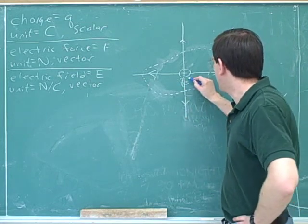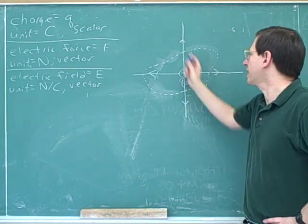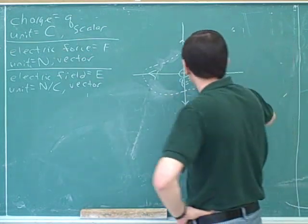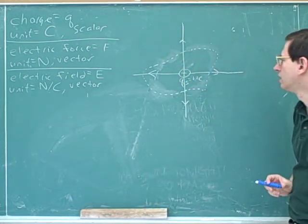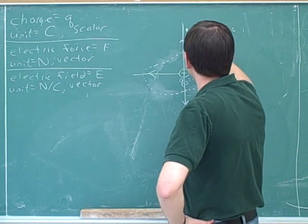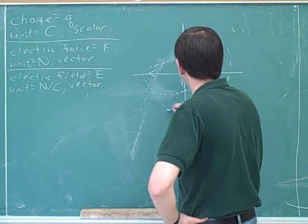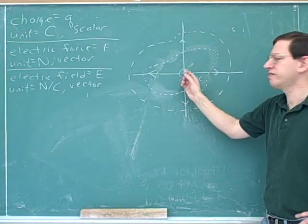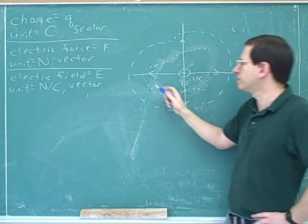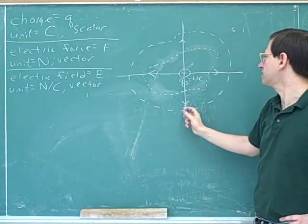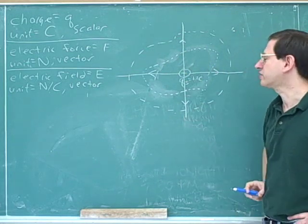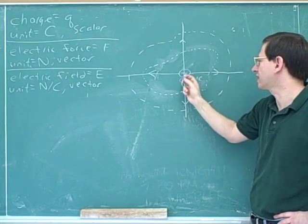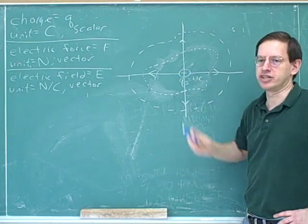For example, here we have a positive one Coulomb source charge and four electric field lines are getting out. Now let me draw a bigger surface — notice it has the same amount of enclosed charge, so it also has the same number of field lines getting out. This bigger surface still has four field lines getting out, and that has to be the case because it has the same amount of enclosed charge. The amount of electric field lines that get out of the surface only depends on how much charge is enclosed.